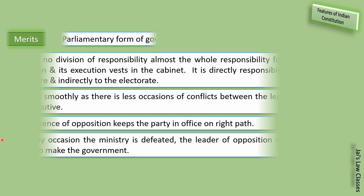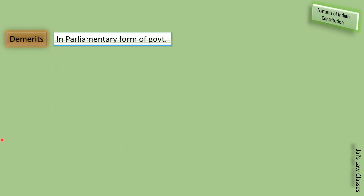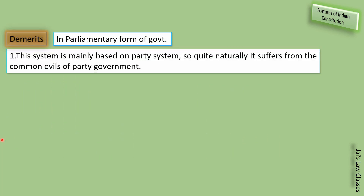Demerits of parliamentary form of government: this system is mainly based on the party system, so it suffers from the common evils of party government. Kuch hadtak ye sach hai ke Indian system mein ye chalta hai — ek party apne benefits aur apne naam ko uchha karne ke liye zyada paisa kharch kar deti hai, which also happens in India.